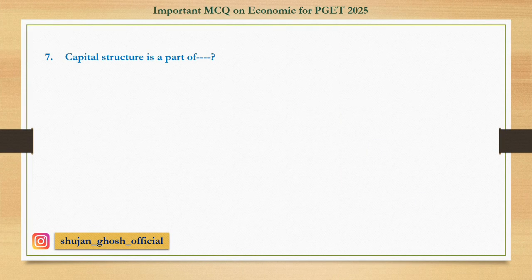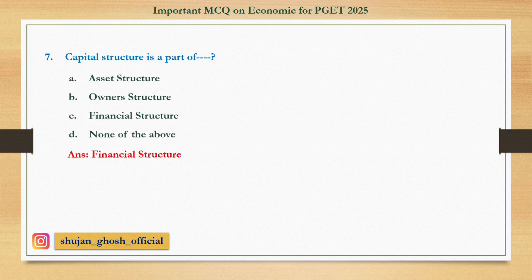Question number seven: Capital structure is part of — option A: asset structure. B: owner structure. C: financial structure. D: none of the above. Answer: financial structure.